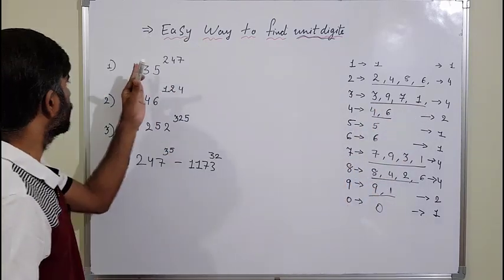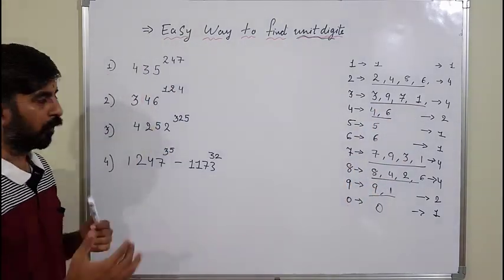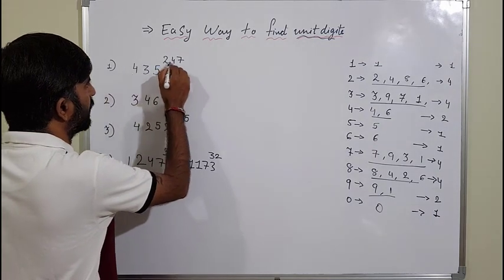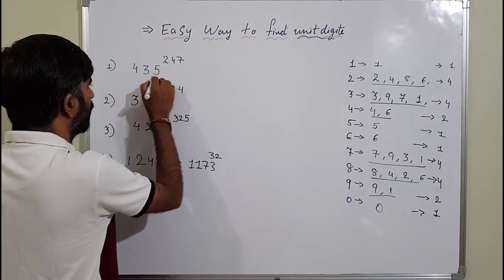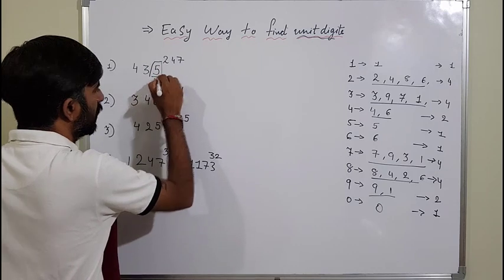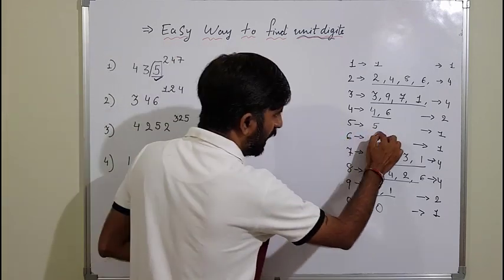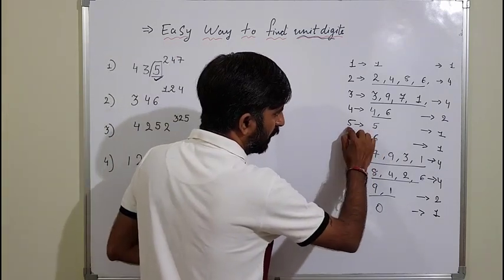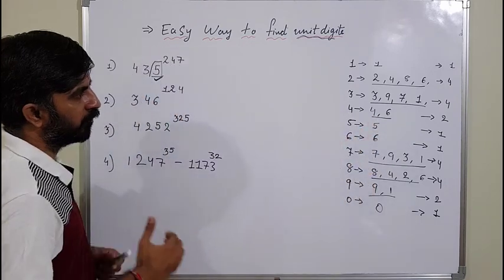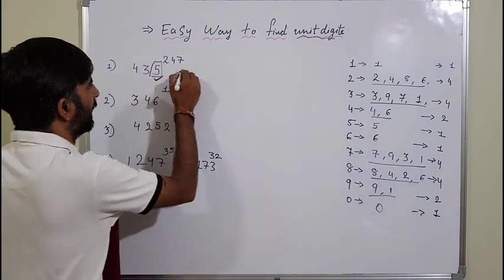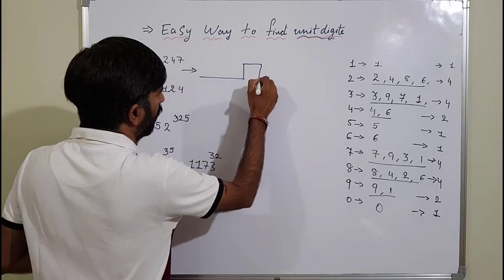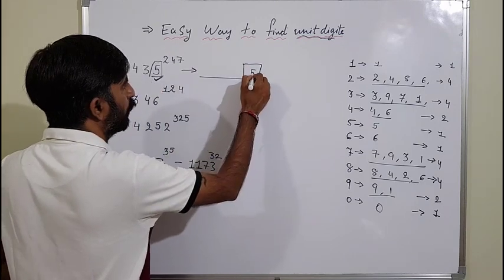This helps us solve problems quickly. For example, 435 raised to any number — the unit digit is 5, and we learned that 5 raised to any power always gives unit digit 5. So directly, the unit digit of the answer will be 5.